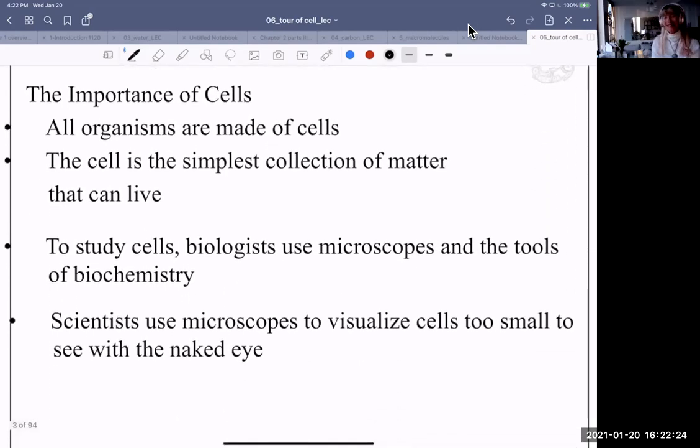Why is it important to study cells? Well, all organisms are made of cells and the cell is the simplest collection of matter that can live. Yeah, and as we saw in the cell lab, there are cells that live just all by themselves. Unicellular organisms.